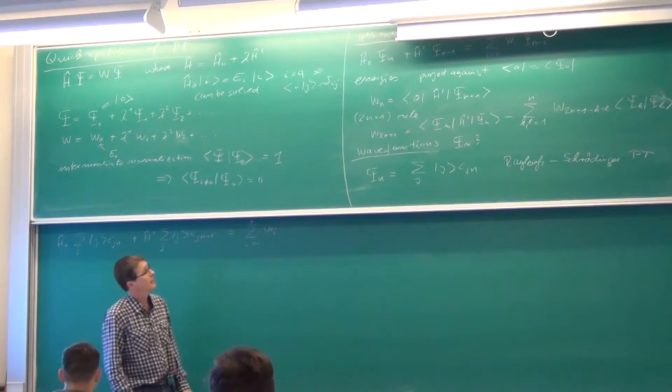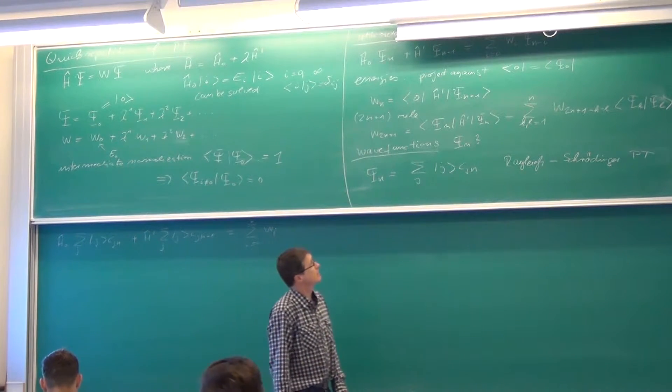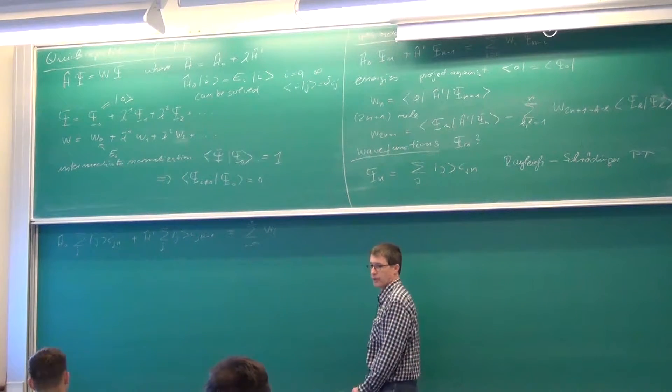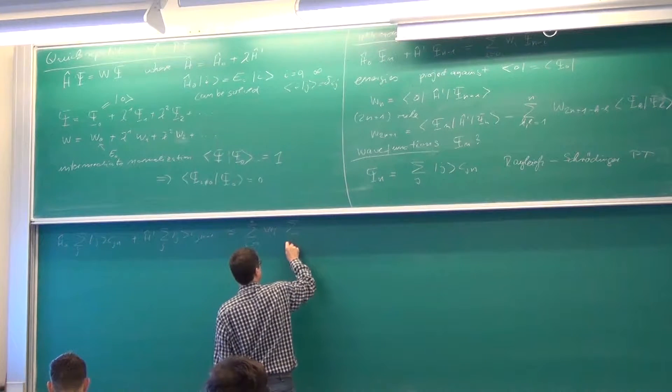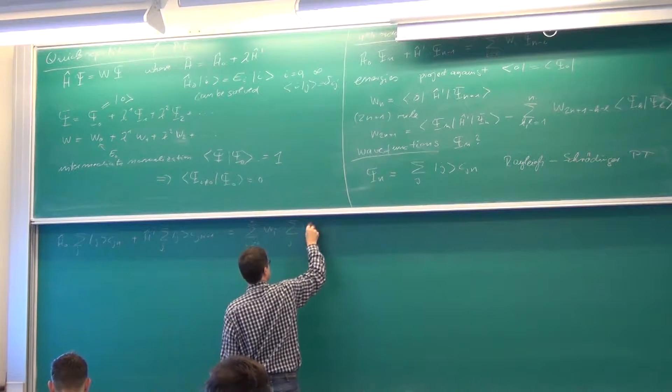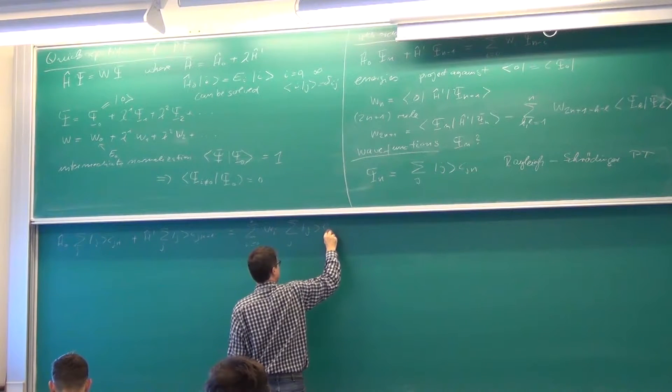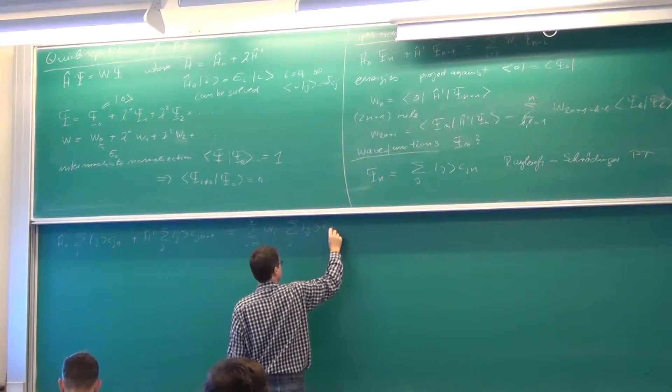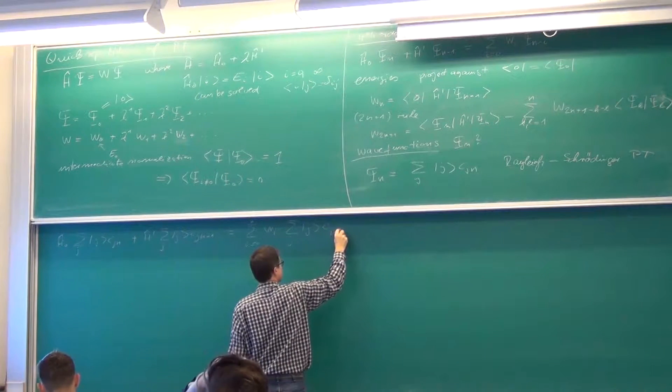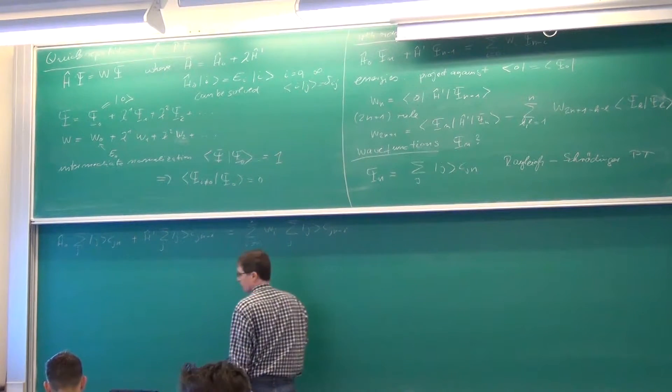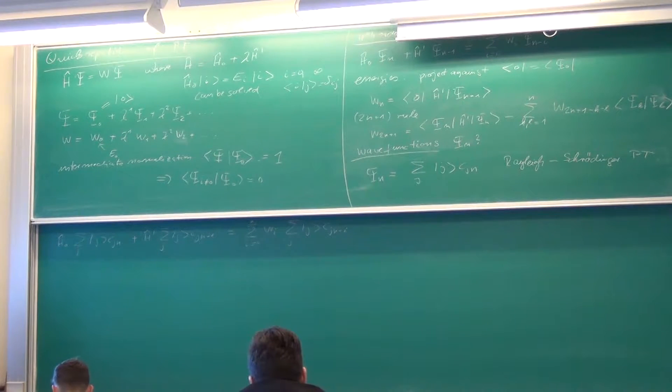And then the right hand side, I had a sum over from zero to n over all orders. In order to get the energies of that order, times the n minus i's order wave function. And that I expand again now, again in j, the set j. And now I have the coefficient j from this basis state, but to the n minus i's order. How do I get the coefficient now?